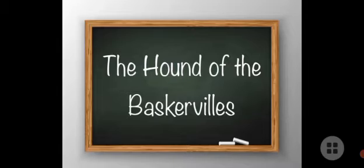Baskervilles is in the Moor of Devon — a mountainous land where no one is staying, used mainly for hunting purposes with farm houses. It is a mystery-related land. There was a saying that in Baskervilles there is a curse: nobody is going to live a long life, and everybody is going to be killed by the hound.